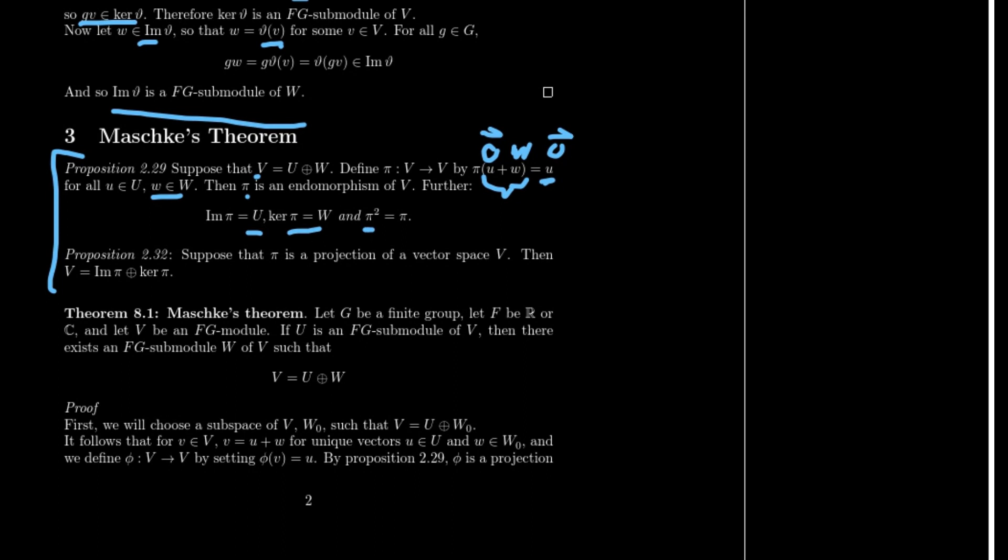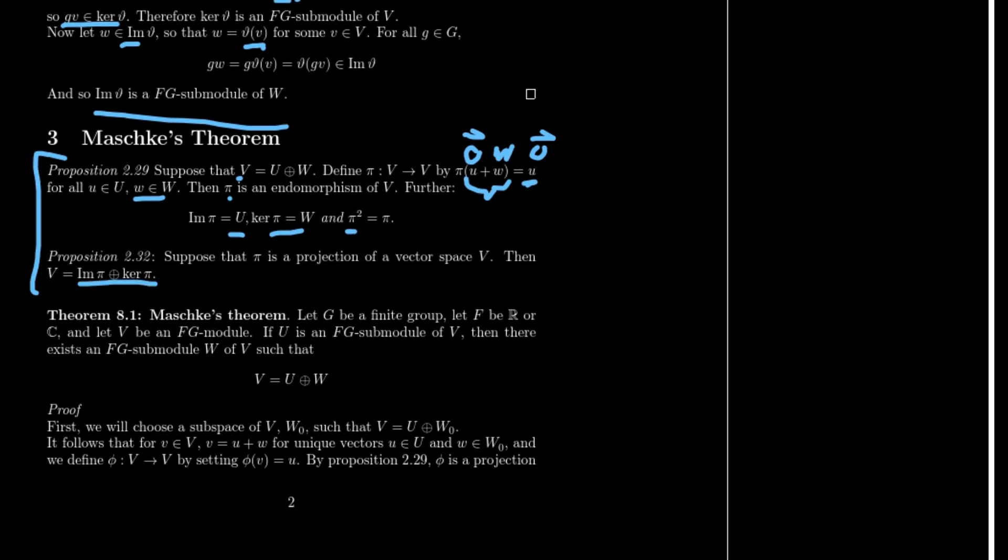Finally, as we can see, π squared simply is just going to be π of U plus W, which equals U, and then π of U, which is just going to be U.